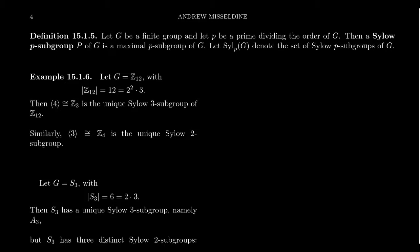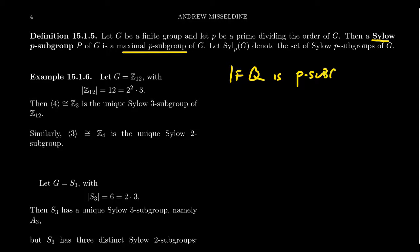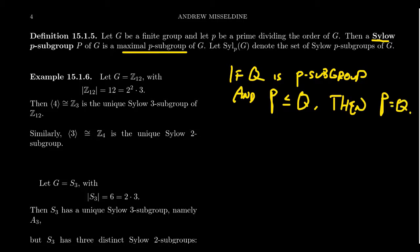Now that we've proven Sylow's first theorem, we're ready to define what a Sylow P-subgroup is. Given a finite group G, let P be some prime divisor of the group. We say that a subgroup — typically called capital P — is a Sylow P-subgroup of G if it's a maximal P-subgroup. Maximal means that if Q is a P-subgroup and P is a subgroup of Q, then P equals Q. It's maximal in the sense that it's maximal on the lattice of P-subgroups — any P-subgroup that contains a Sylow P-subgroup is actually the Sylow subgroup itself.